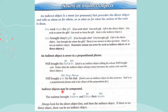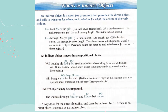Indirect objects may be compound. They can't be possessive nouns and they can't be objects of a preposition, but they can be compound — meaning you could have more than one, just like direct objects. For example: The waitress brought Andrew and Ethan their steaks. She didn't bring Andrew and Ethan — she brought the steaks. So steaks is your direct object. The waitress brought steaks to whom? To Andrew and Ethan — so that's a compound indirect object. Always look for the direct object first and then the indirect object. If there is no direct object, there can be no indirect object. You have to have that direct object first.